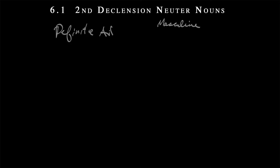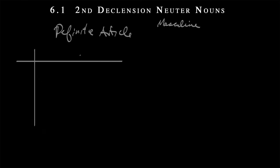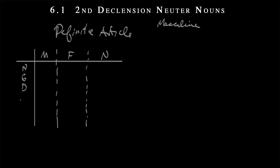So let's start off with the definite article first on the left. Remember, the definite article in Greek is something similar to the definite article in English, but with some exceptions. To begin with, we've got these three genders: masculine, feminine, and neuter. That's the traditional order. There's no reason to put masculine before feminine here, but this is just how it's done in the past, to be identical to other books.